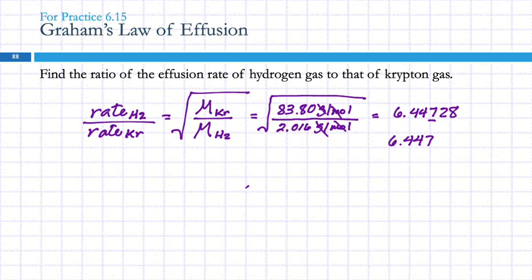The ratio of the rate of effusion of hydrogen to krypton is 6.447 to 1. So hydrogen effuses 6.447 times faster than krypton.